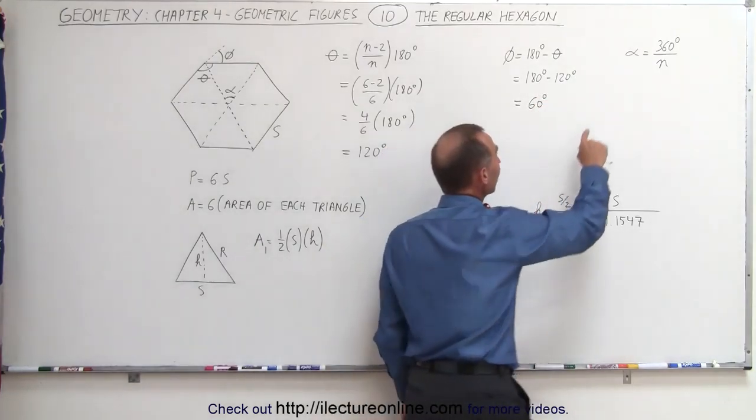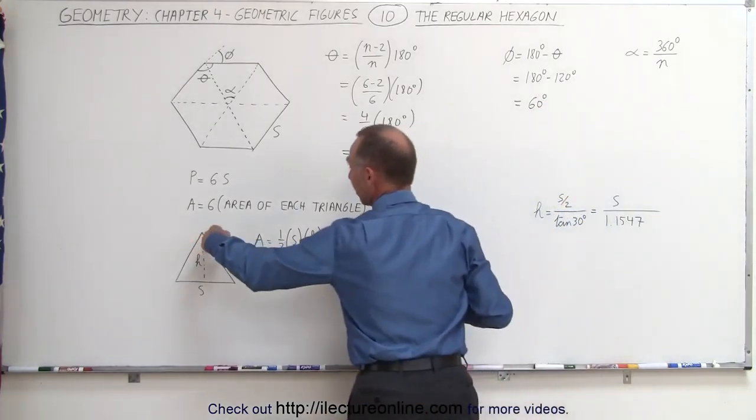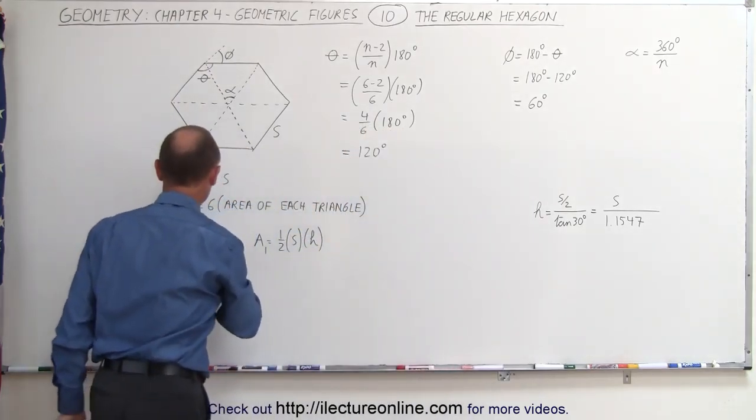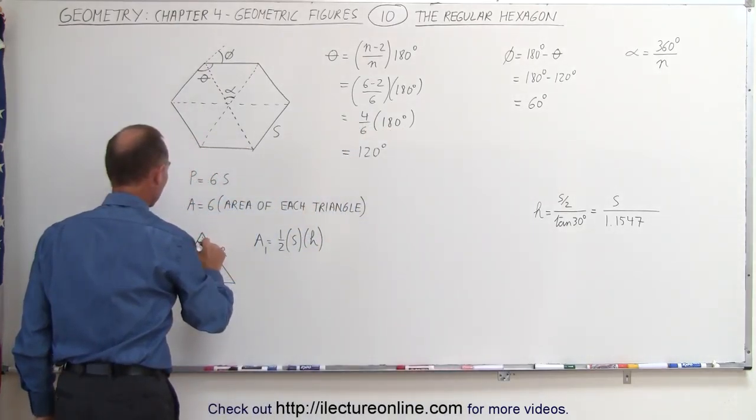Now we're wondering, is that going to be the same as the angle alpha here, which is the tip of each of the triangles? So this here, we're looking for this angle right here, which is alpha.